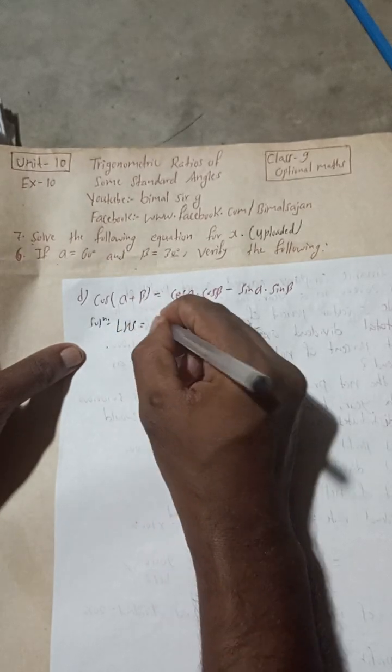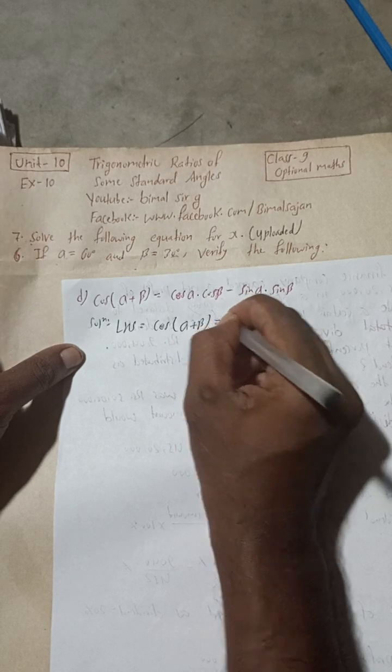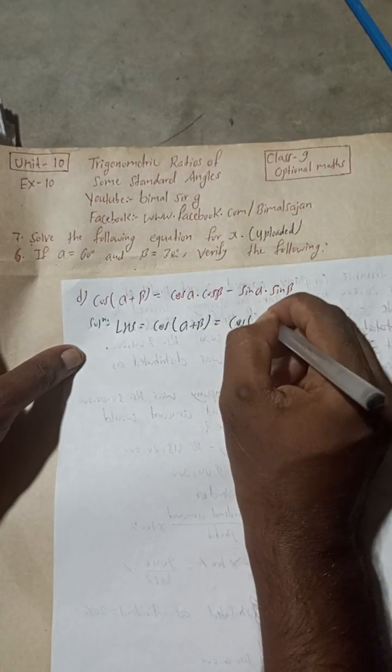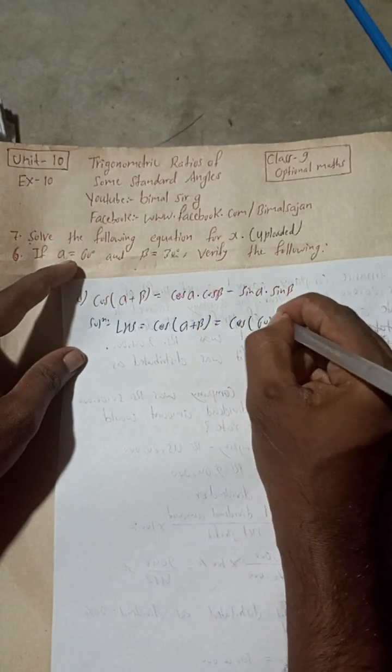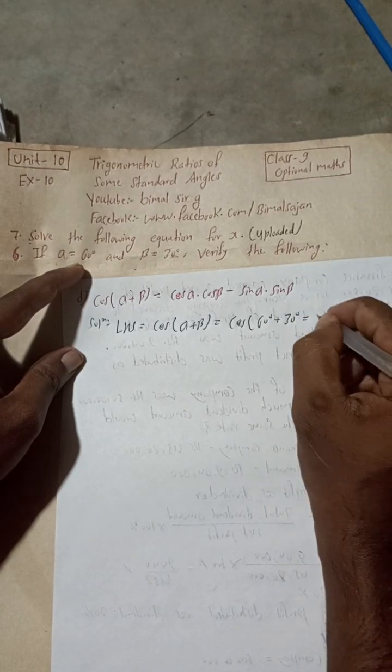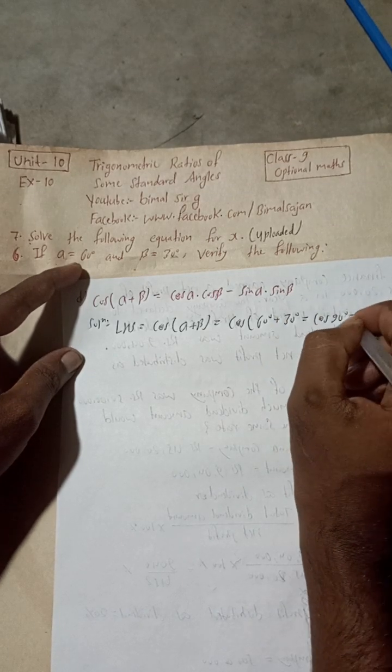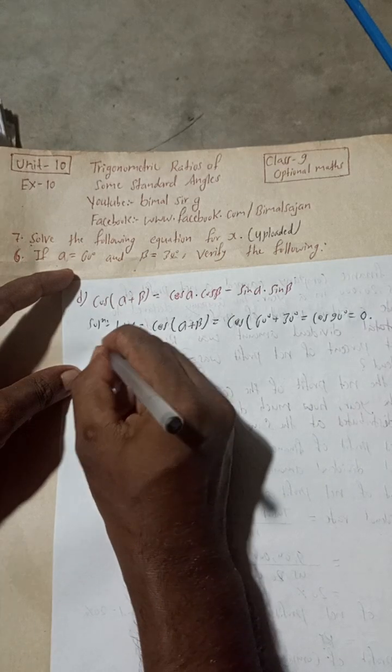LHS is cos(alpha + beta), that is cos(60 + 30), which equals cos(90 degrees). Cos 90 degrees is equal to 0.